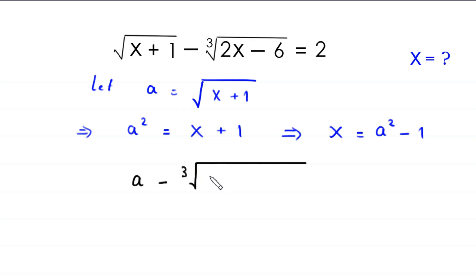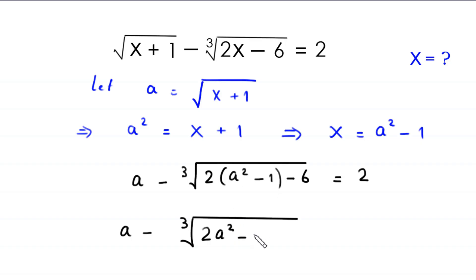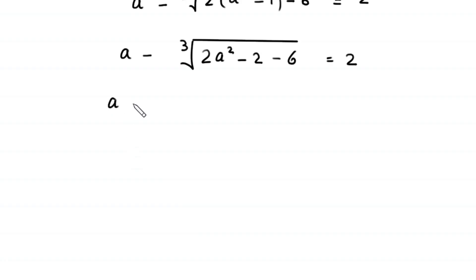So the original equation will become: a minus cube root of 2 times (a squared minus 1) minus 6, equal to 2. Simplifying inside the cube root: 2 times a squared gives 2a squared, and 2 times negative 1 gives negative 2, so we have a minus cube root of (2a squared minus 2 minus 6) equal to 2.